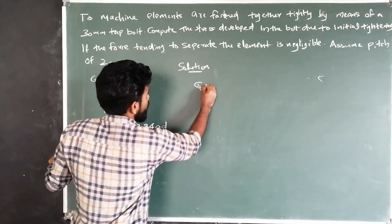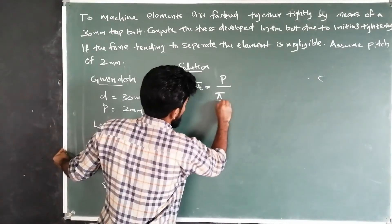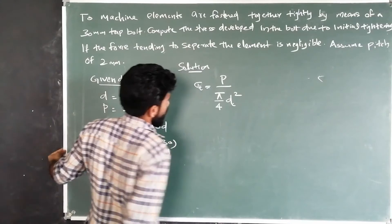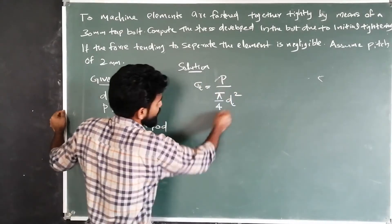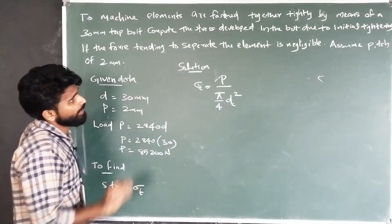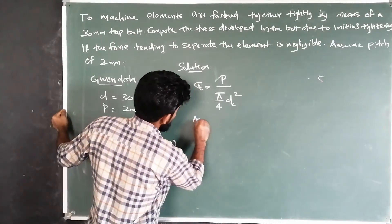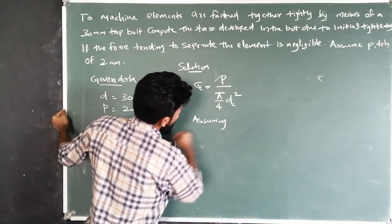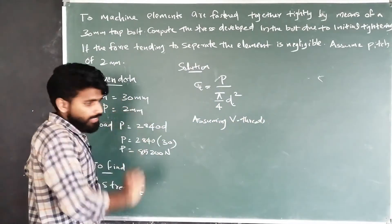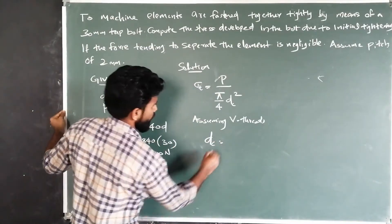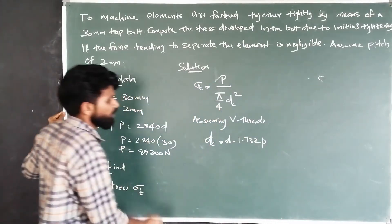Stress equals load divided by area. Initial tightening uses the equation: stress equals P divided by area, which is pi by 4 times dc squared. In this question, the thread type is not mentioned, so we will assume it is a V-thread. For V-thread, dc is equal to D minus 1.732 times P.